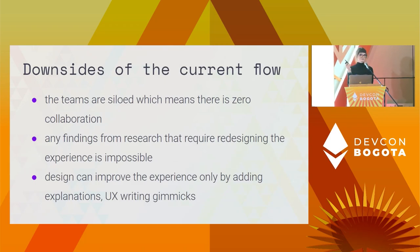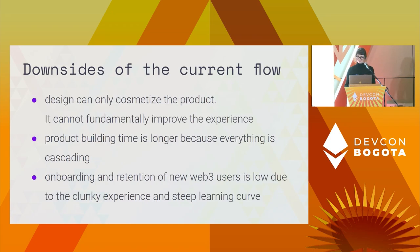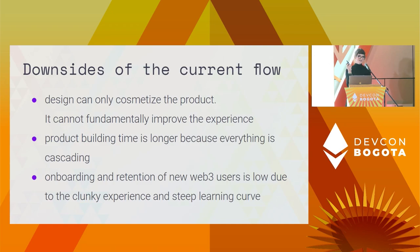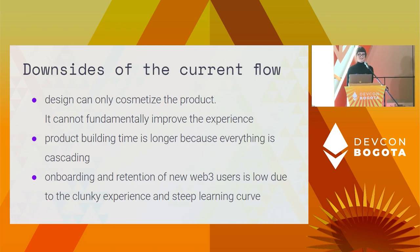So these are the downsides of this flow: the teams are siloed, which means there is zero collaboration. Any findings from design research that require redesigning the experience are impossible because the smart contract has been audited and fixed — there is no turning back. Design can only improve the experience by adding explanations and UX writing gimmicks. Design can only cosmetize the product; it cannot fundamentally improve the experience. Product building time is longer because everything is cascading, and onboarding and retention of new web3 users is low due to the clunky experience and steep learning curve.